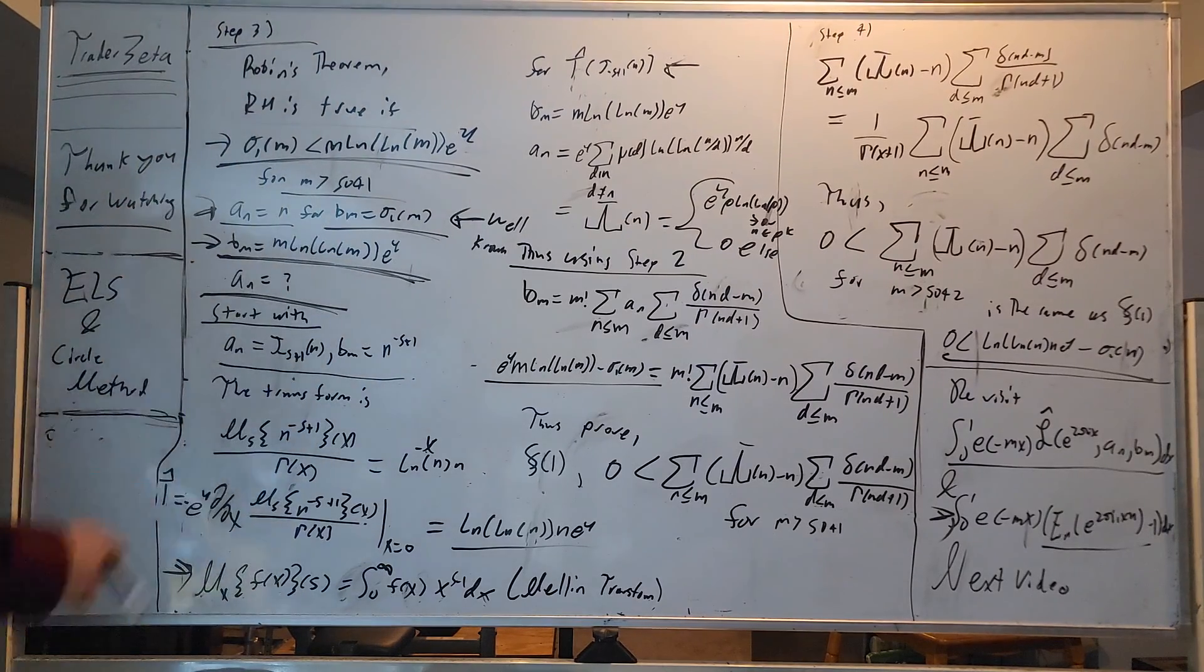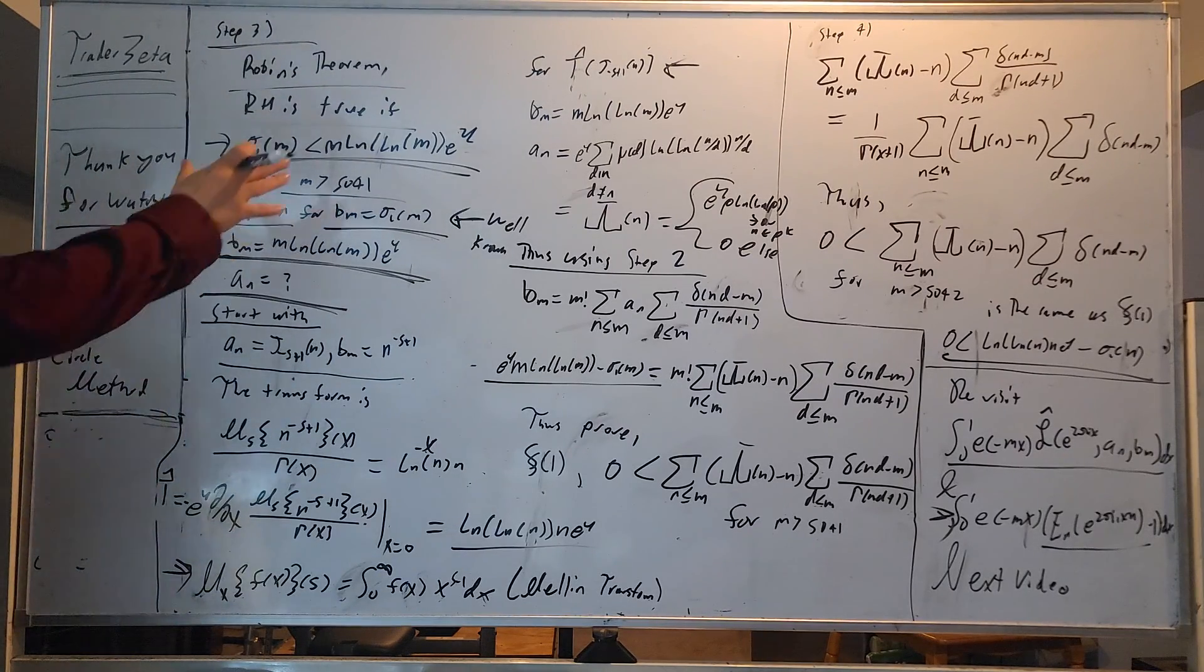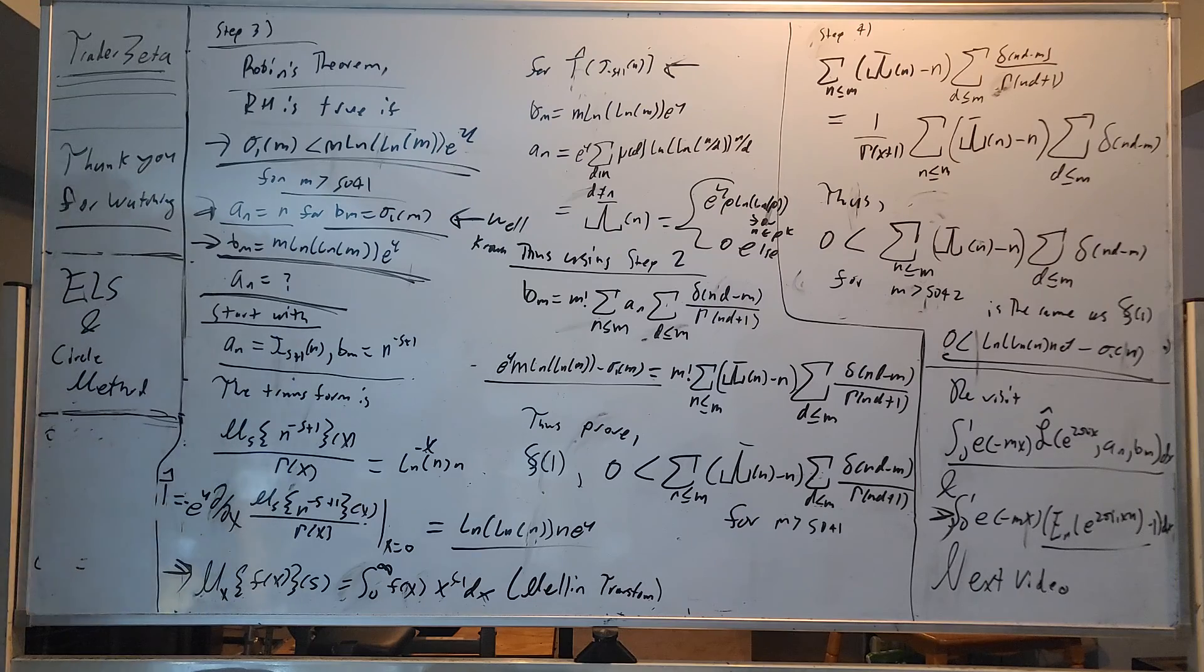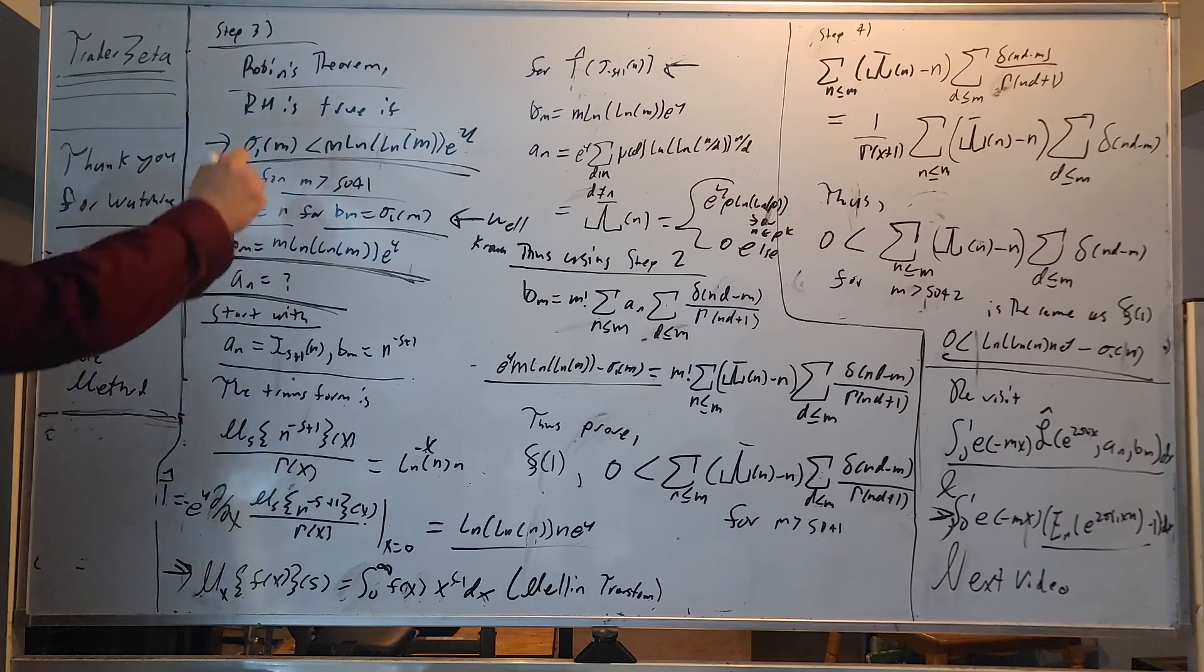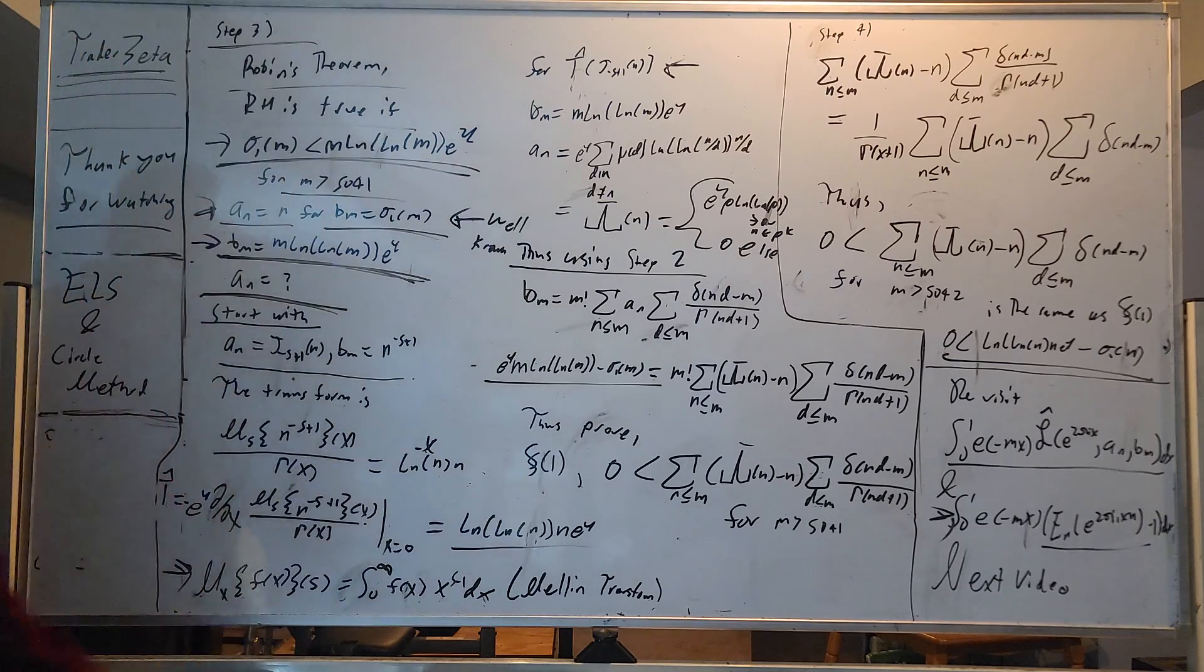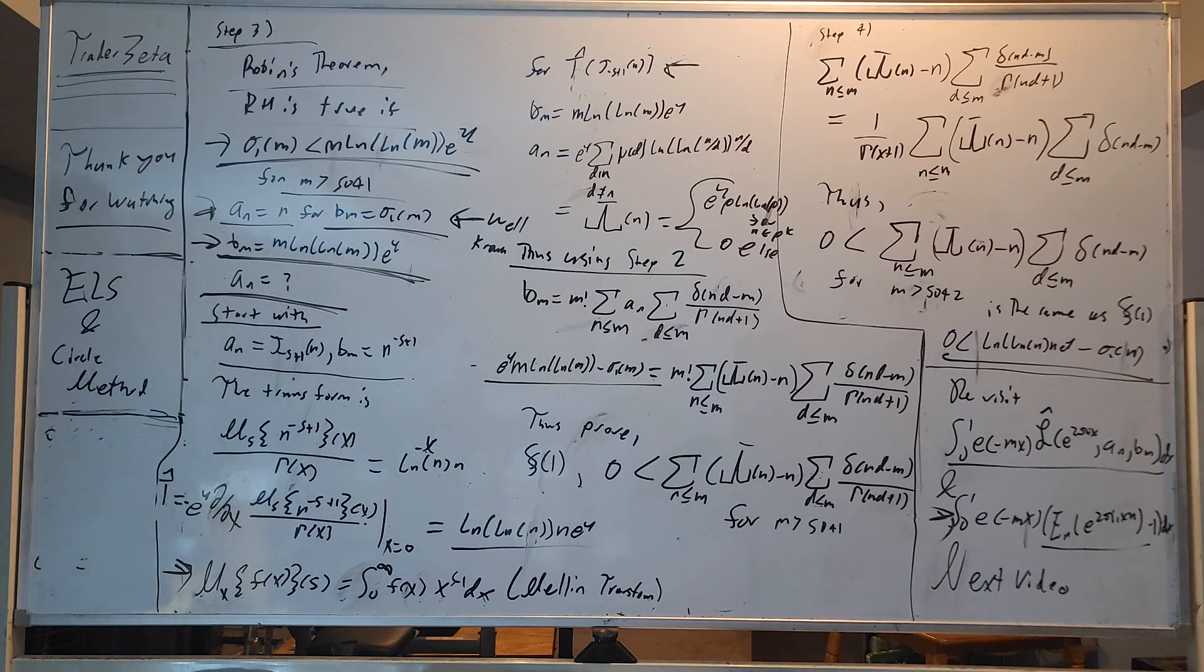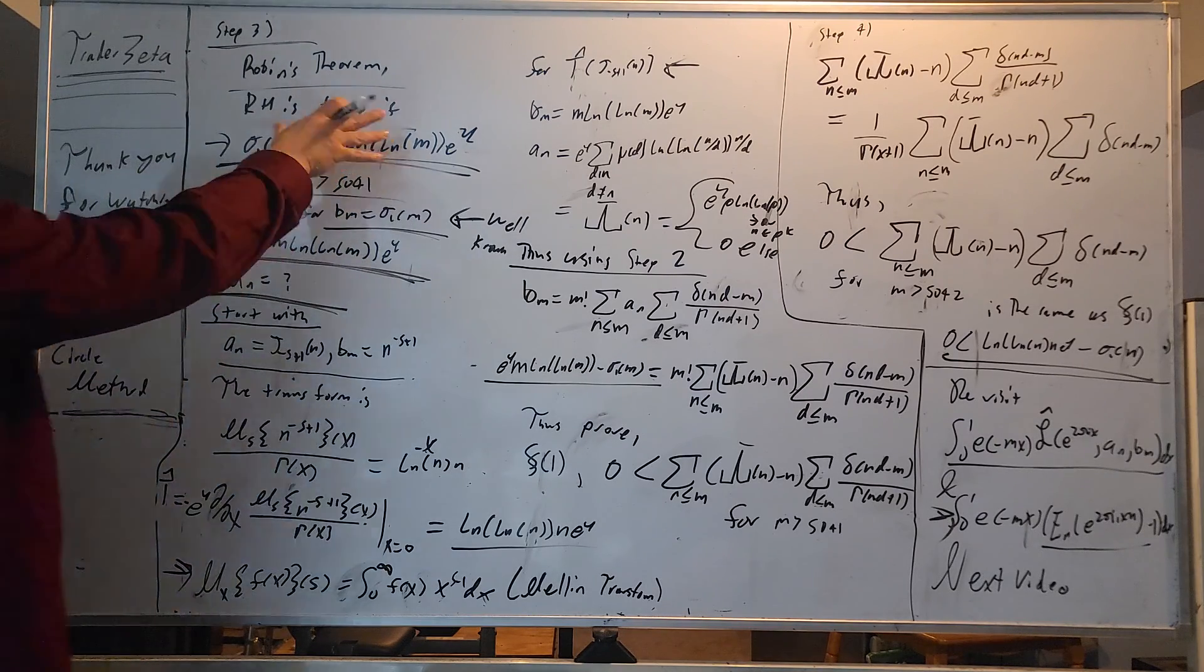Now, what we need to do is define e of x equals e to the 2 pi i x. And what we're going to do is we're going to plot e of x into f of x. And we're going to get this guy right here. And now we can do our circle method for whatever you want to call it. You take the integral 0 to 1 of that function.